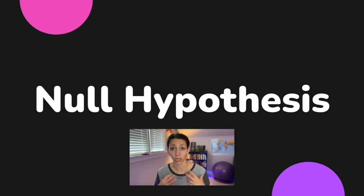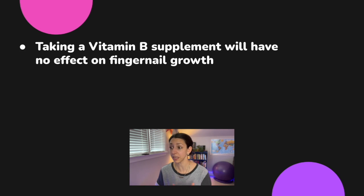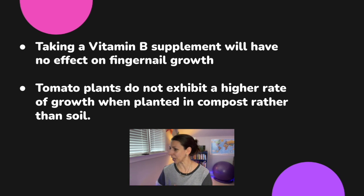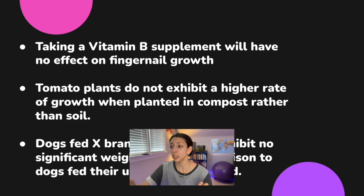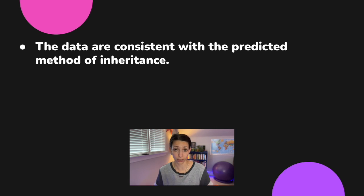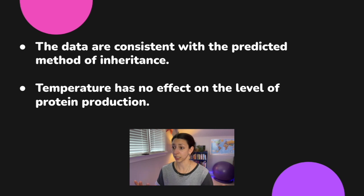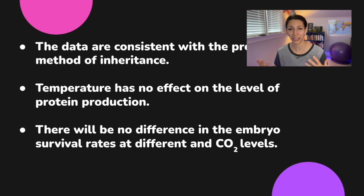In statistics, if you reject the null hypothesis, then the alternative hypothesis — which says there will be a change — can be accepted. Examples of null hypotheses: taking a vitamin B supplement will have no effect on fingernail growth; tomato plants do not exhibit a higher rate of growth when planted in compost rather than soil; dogs fed brand X dog food exhibit no significant weight gain compared to dogs fed their usual brand. In genetic experiments: the data are consistent with the predicted method of inheritance — no change from the theoretical probabilities. Temperature has no effect on the level of protein production. There will be no difference in embryo survival rates at different carbon dioxide levels. That repetition of no effect, no difference — that's what you're going for in a null hypothesis.